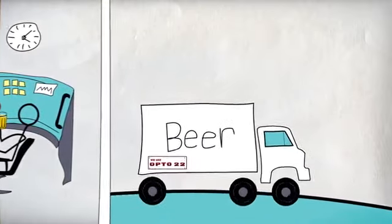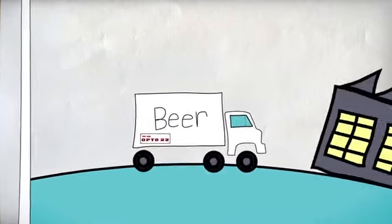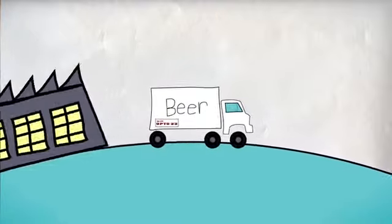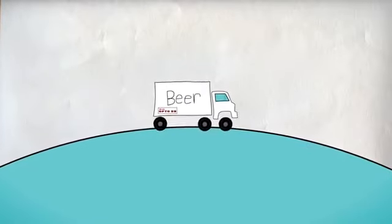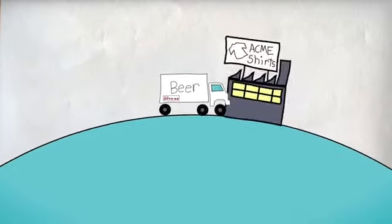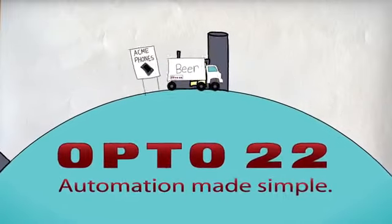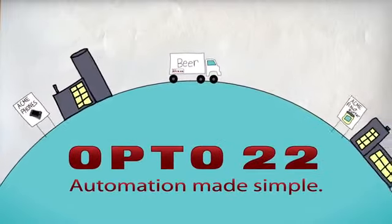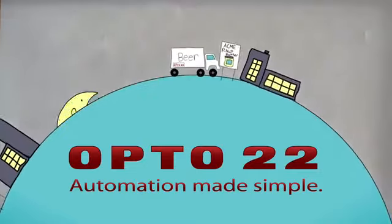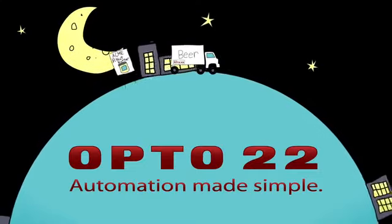At Opto22, we make automation hardware and software to help industries around the globe produce and deliver many of the products we use today, from T-shirts to smartphones. Opto22 - we make automation simple.